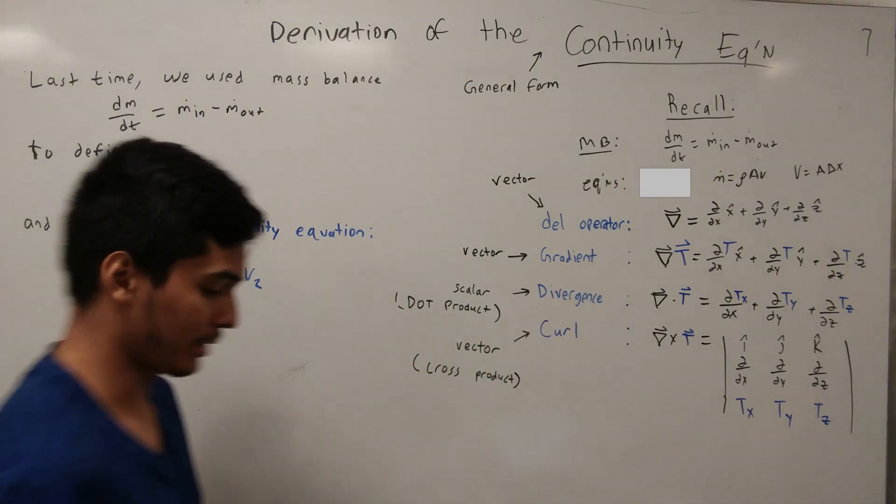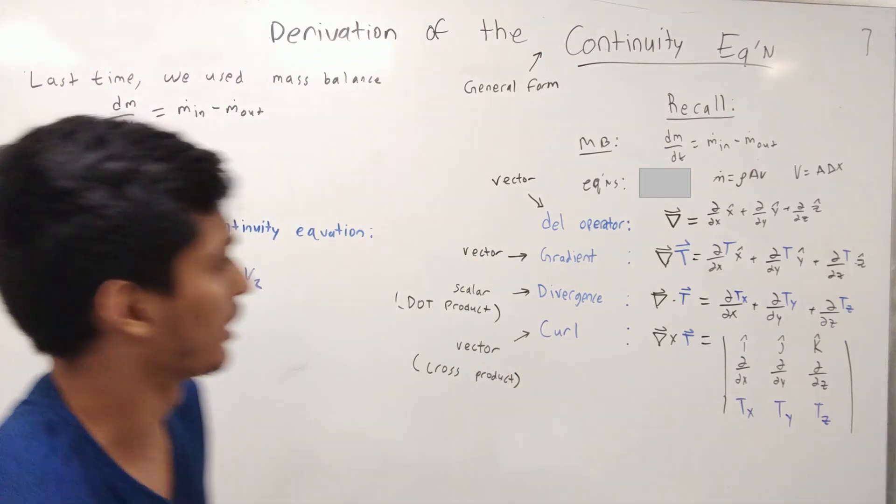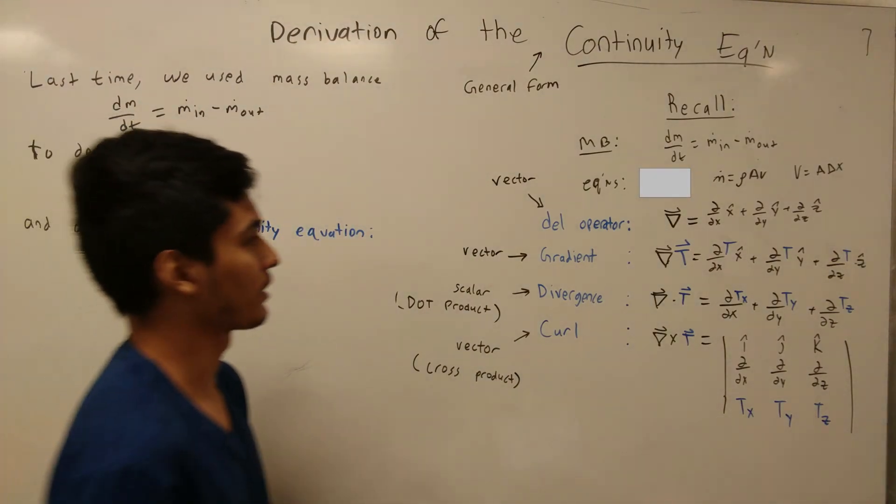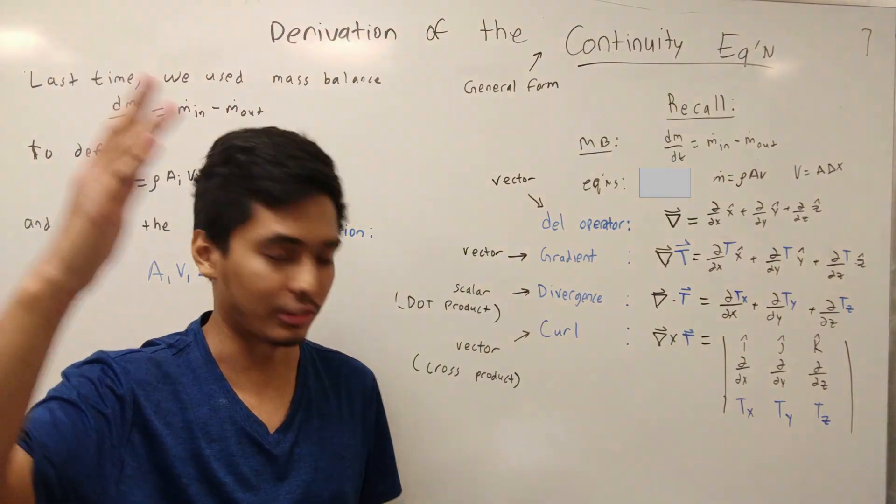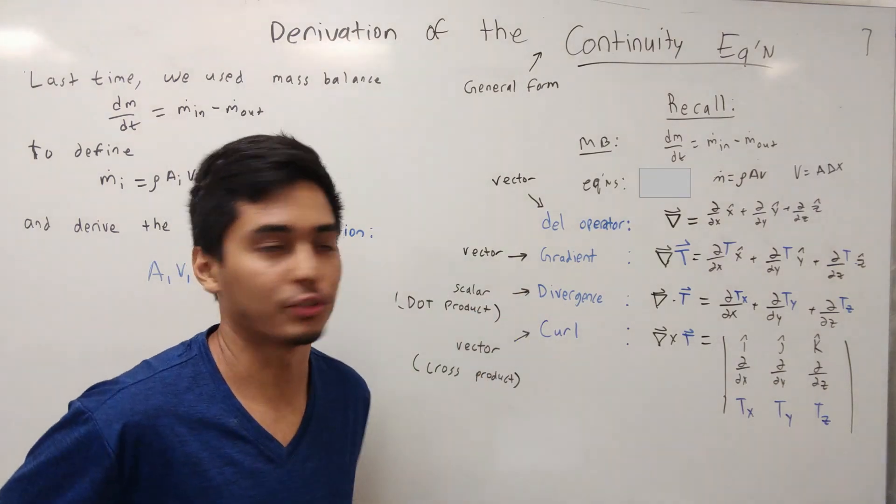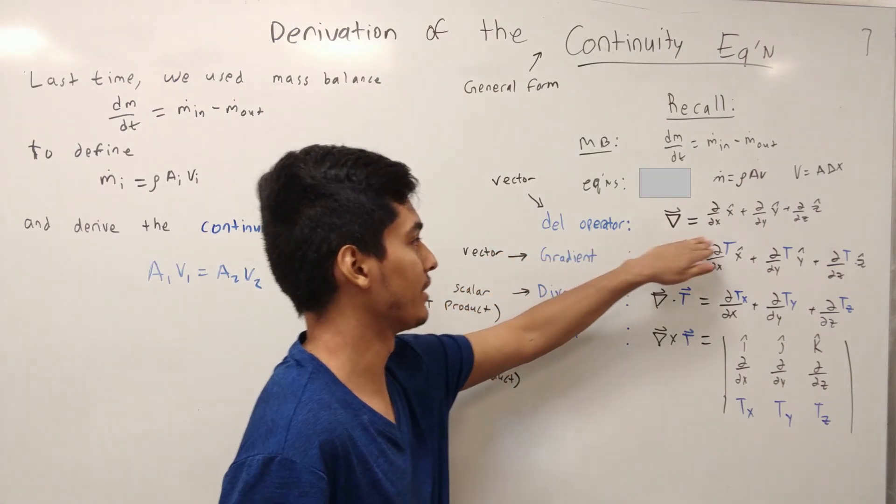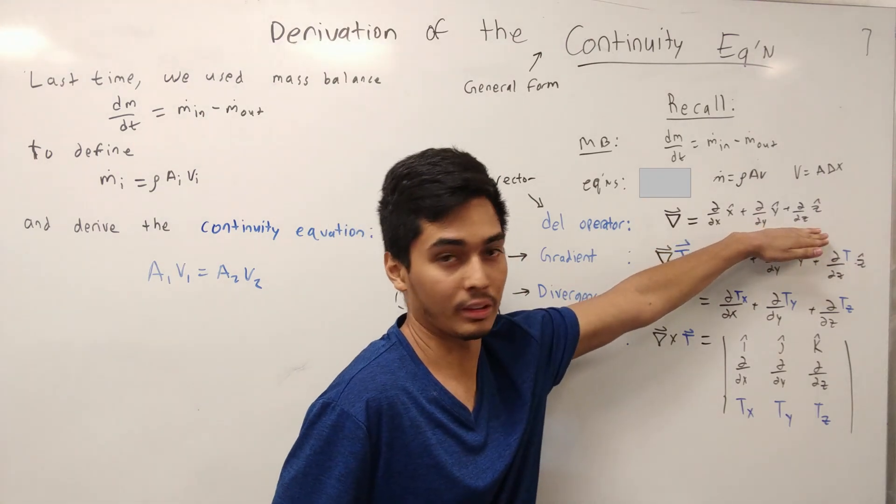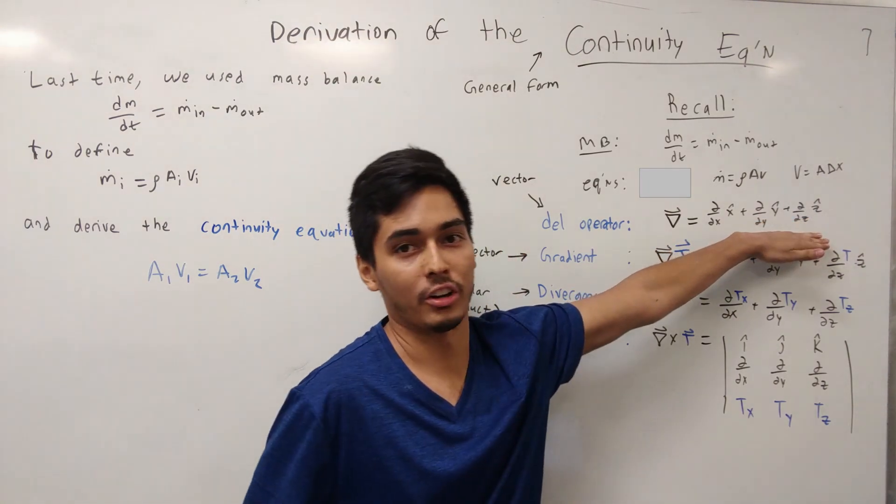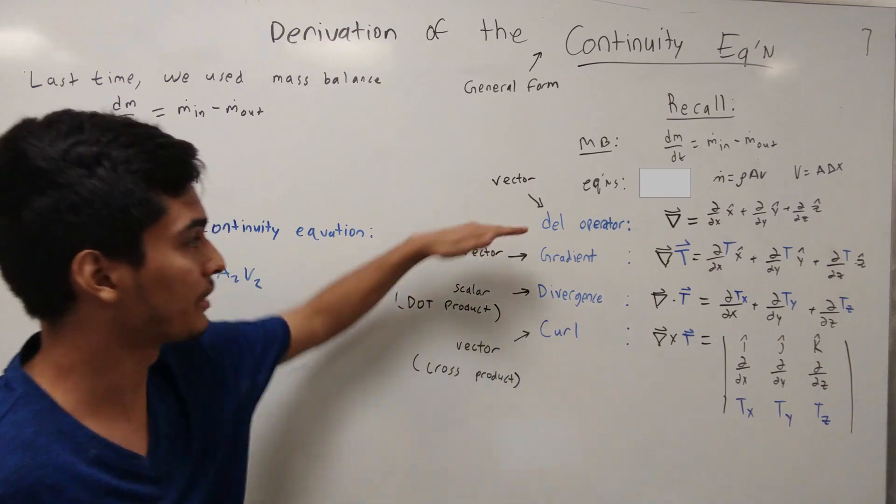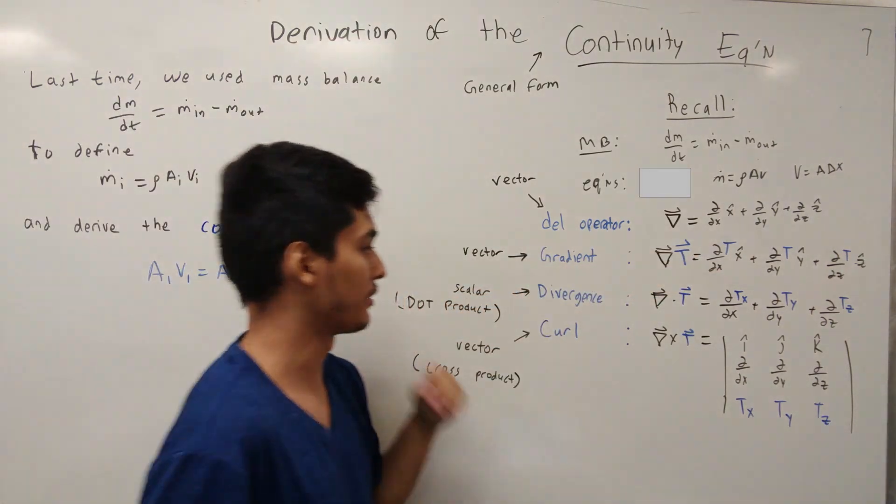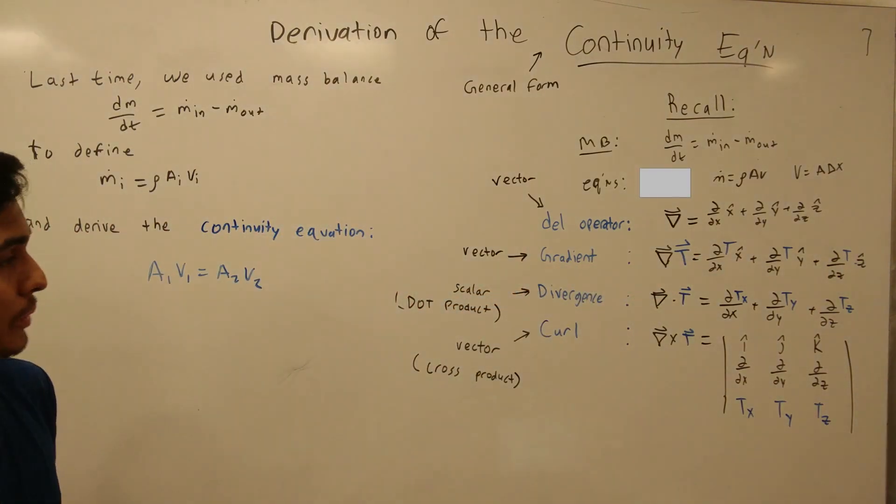Now, some definitions you may recall if you've taken multivariable calculus or linear algebra, and so we have the del operator. The del operator is a vector quantity that acts on something else. The del operator can act on a vector quantity to give you different things.